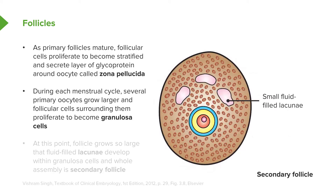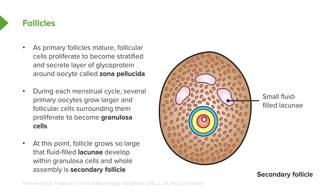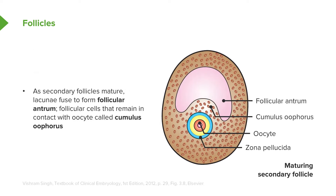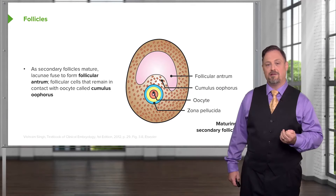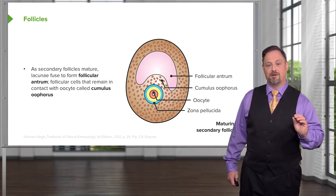The granulosa cells have proliferated to the point where they can no longer sustain themselves by simply having nutrients diffused to and from them, so we have small vacuoles starting to form within this secondary follicle. These lacunae, or little fluid-filled sacs, are going to connect, get bigger, and surround the egg on one side. We can see here a more mature secondary follicle with a large open cavity called the follicular antrum. The coating of cells that surround the egg but keep it close to the follicular antrum are specifically called the cumulus oophorus — one of the specialized terms applied to the cells around the egg as they become more distinct from one another.